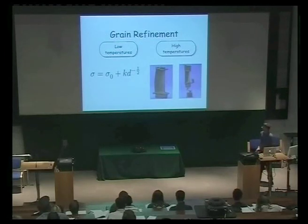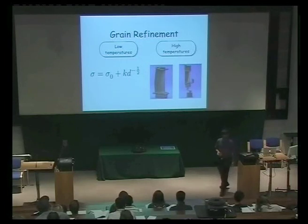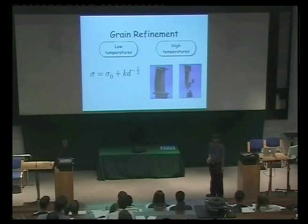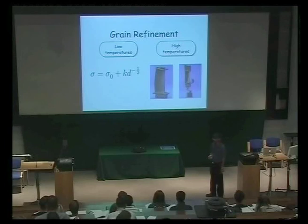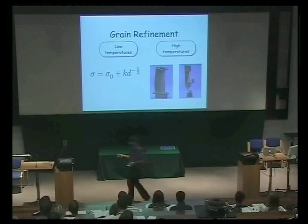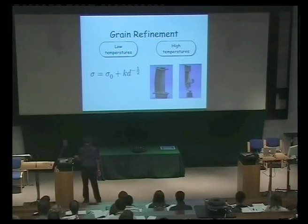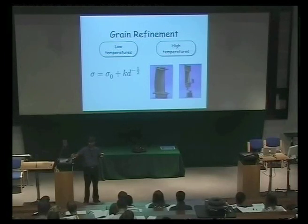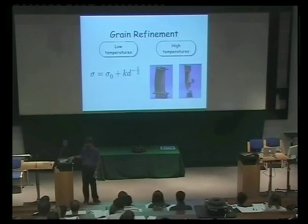I gave you the example of a single crystal turbine blade as opposed to a polycrystalline blade. Here I said that grain boundaries are a bad thing, because these blades operate at very high temperature, and grain boundaries are easy diffusion paths. They help diffusion to happen in a direction which lengthens the blade, which is not what you want because it will hit the engine casing. So we want to avoid creep.